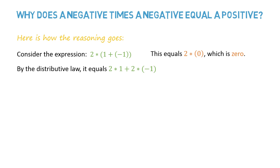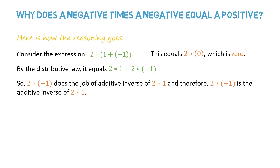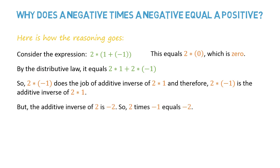But by the distributive law, it equals 2 times 1, plus 2 times minus 1. So 2 times minus 1 does the job of the additive inverse of 2 times 1, and therefore 2 times minus 1 is the additive inverse of 2 times 1. Since 2 times 1 equals 2, and the additive inverse of 2 is minus 2, and a number has exactly one additive inverse, 2 times minus 1 equals minus 2. Therefore, we have to accept that negative times positive equals negative.